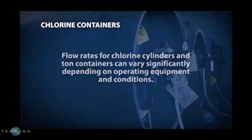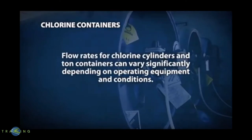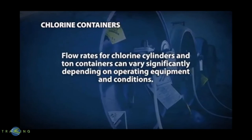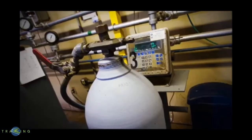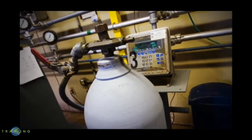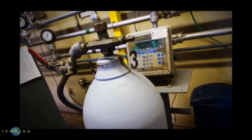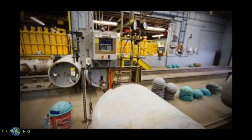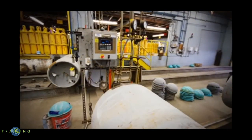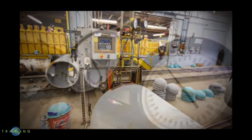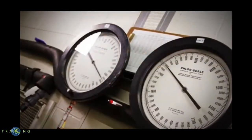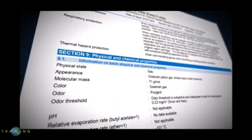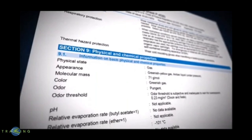Flow rates for chlorine cylinders and ton containers can vary significantly depending on operating equipment and conditions. The only way to make certain a container is empty of liquid chlorine is to weigh it on a scale. Chlorine vapors will remain in the container even when liquid is gone. To ensure scale accuracy, follow the manufacturer's recommendations regarding calibration. More information on chlorine's physical and chemical properties can be found in Section 9 of the Safety Data Sheet.